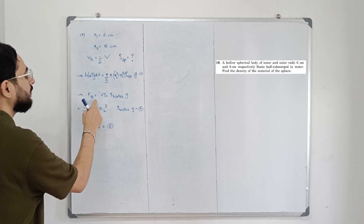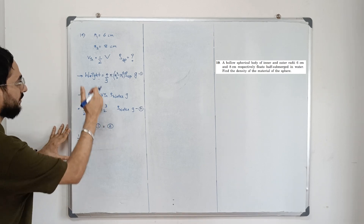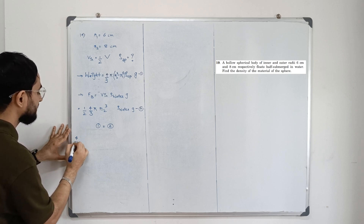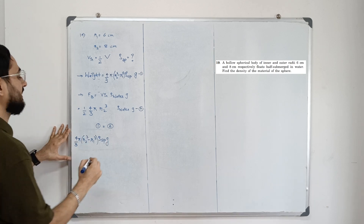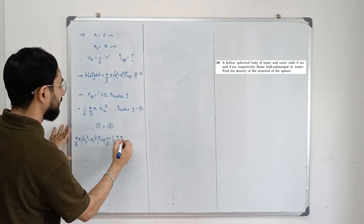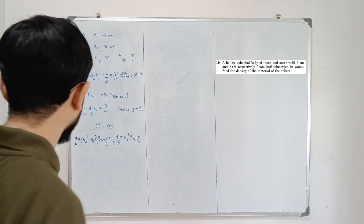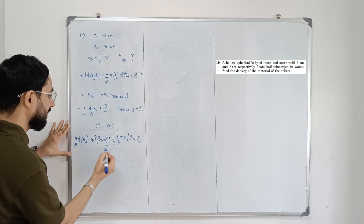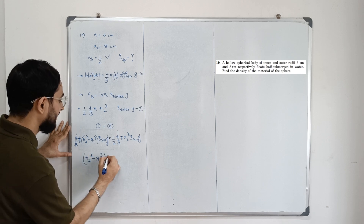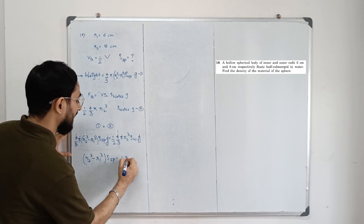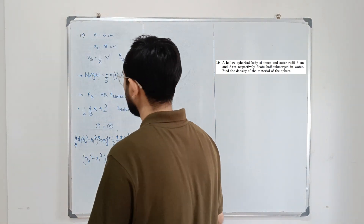Setting equation one equal to equation two: (4/3)π(r2³ − r1³) × ρ_sphere × g = (1/2) × (4/3)π × r2³ × ρ_water × g. Cancelling (4/3), π, and g from both sides gives: (r2³ − r1³) × ρ_sphere = (1/2) × r2³ × ρ_water.